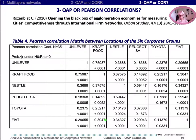The highest correlation is between Kraft Foods and Unilever, two food industrial groups who share essentially the same market all over the world.